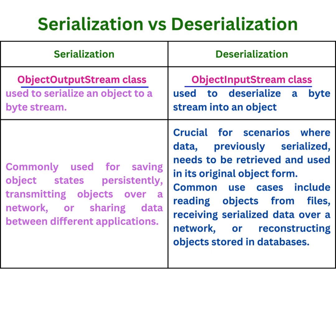In serialization, the ObjectOutputStream class can be used to serialize an object to a byte stream. However, in deserialization, the ObjectInputStream class can be used to deserialize a byte stream into an object.